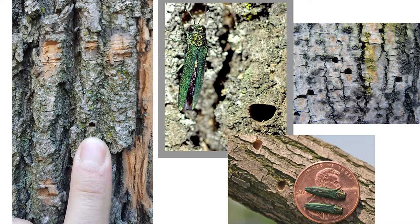We will now be showing pictures that will give you visual cues of infected trees. This is an eighth of an inch dome-shaped exit hole. Other borers have D-shaped but much larger exit holes.